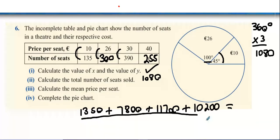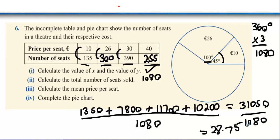Now, how many seats were there in total? 135 plus 300 plus 390 plus 255? Over 1,080. So what did you say? 31,000? And divide that by 1,080. What's the price of the average seat? 28 euro and 75 cent.